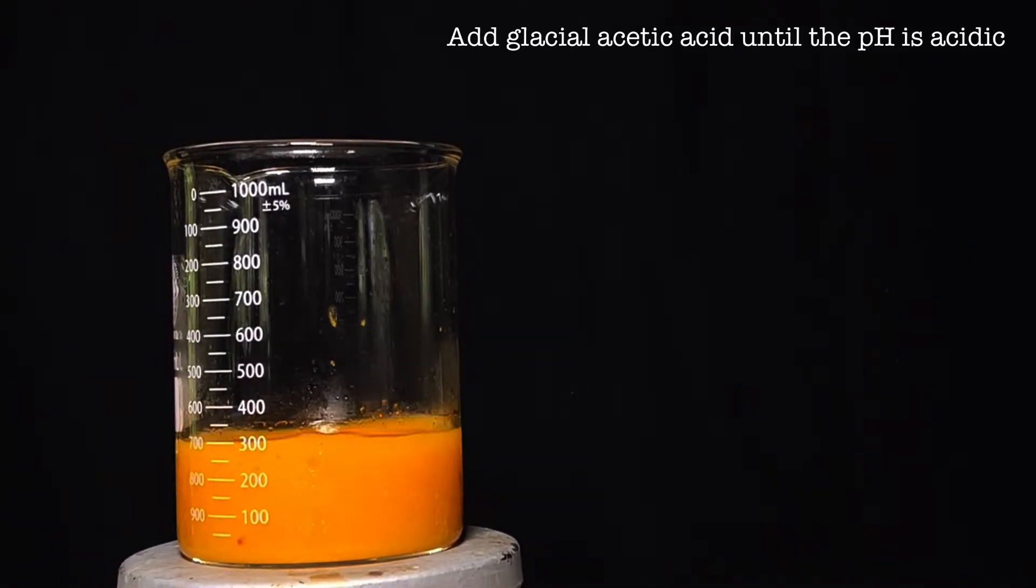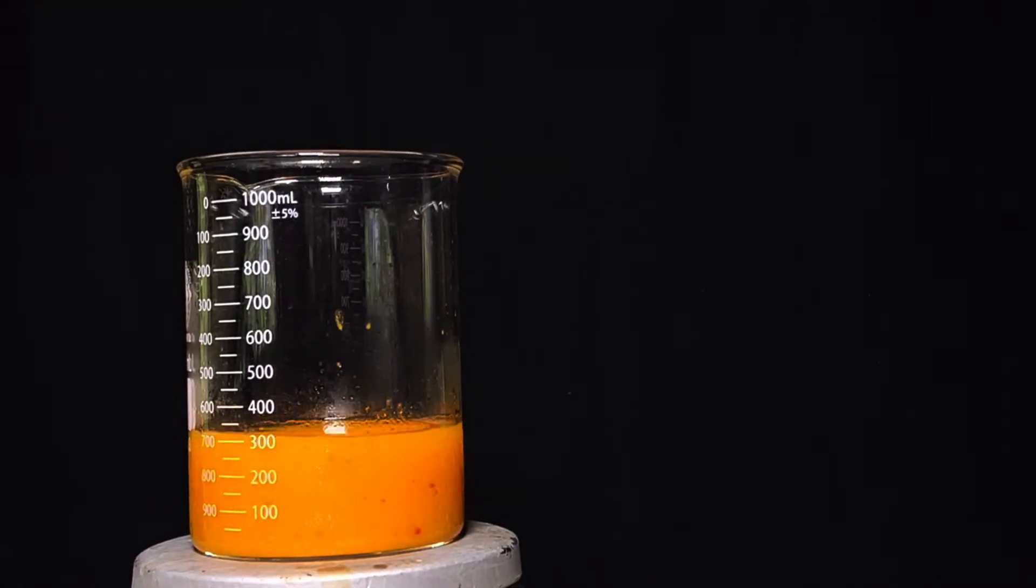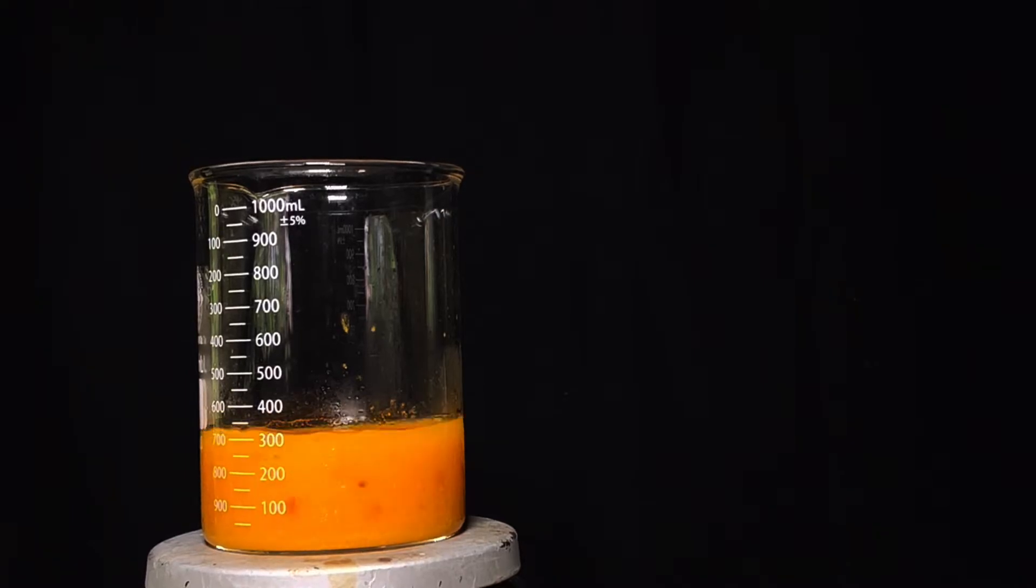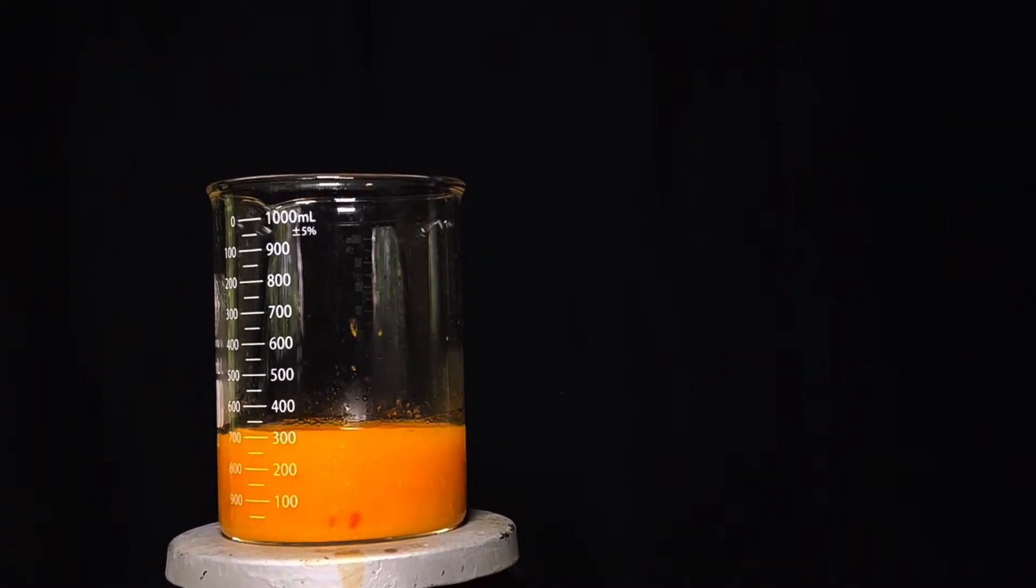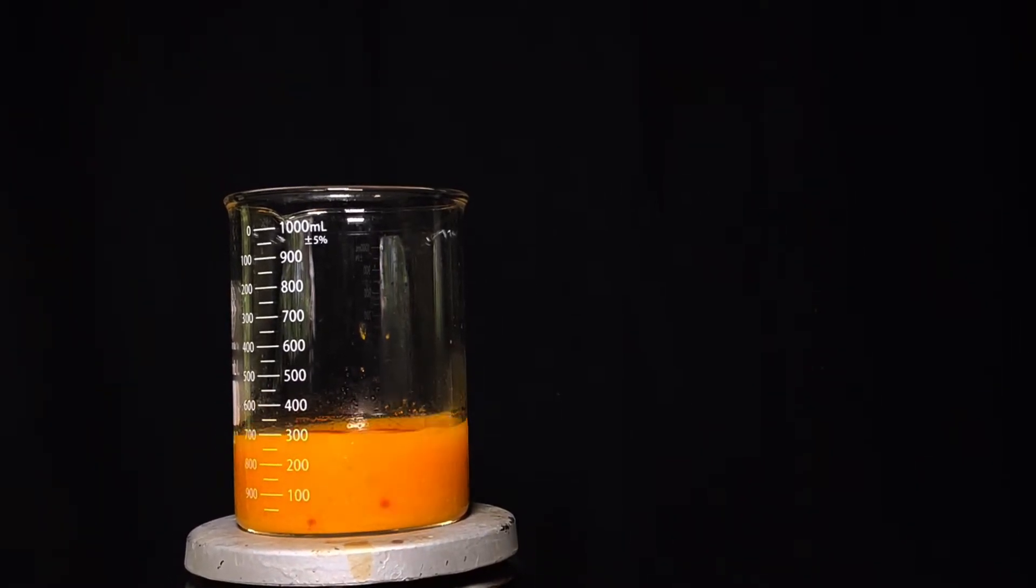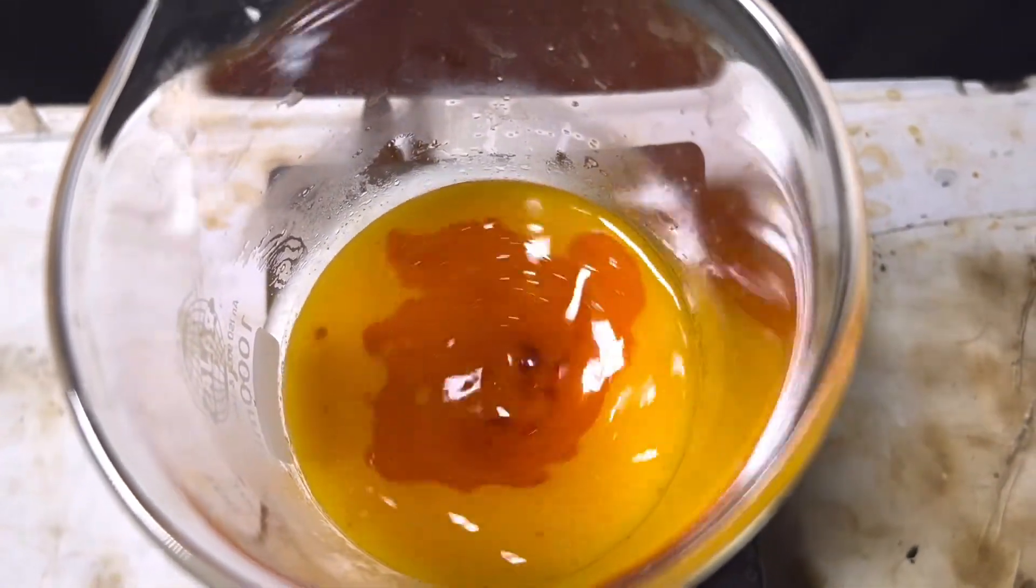Then glacial acetic acid was added until the pH of the solution becomes acidic. This was tested from time to time using a pH paper. After the solution becomes acidic, the color of the contents have transformed from bright yellow to orange. There is also some deep orange to red colored oily droplets floating around. And this is the crude azobenzene.